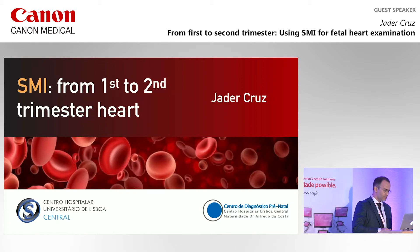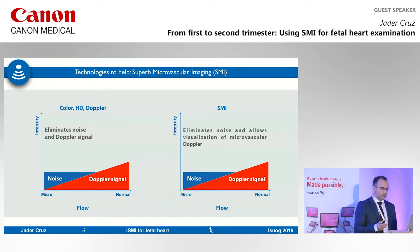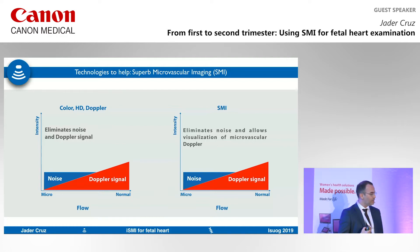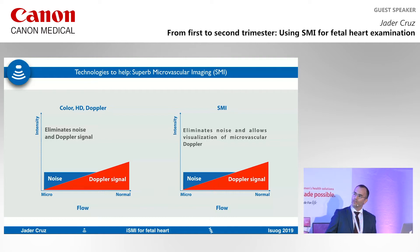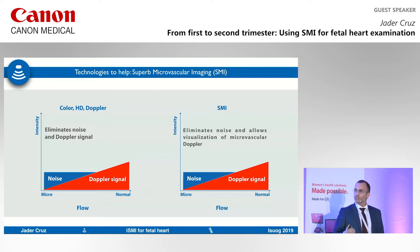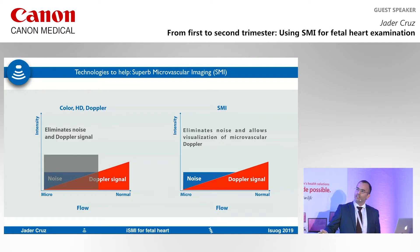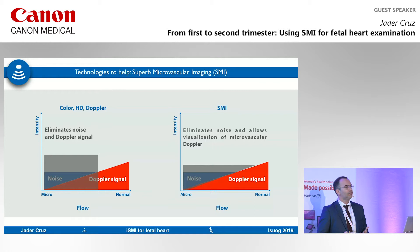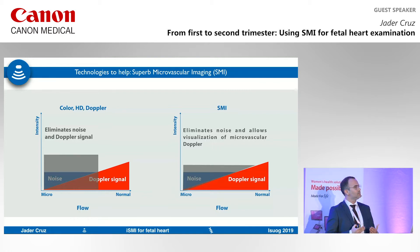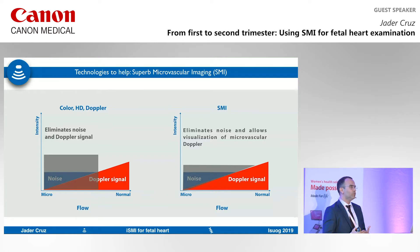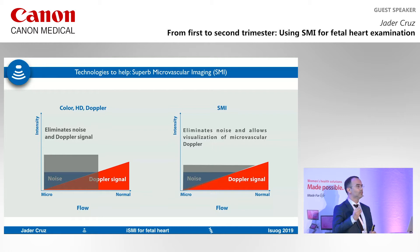So what is SMI? It looks very technical but it's actually quite simple. When you have a Doppler signal, you always have a little bit of noise. The machine cuts the noise, but you lose a little bit of the Doppler signal as well. SMI is similar to any other high-definition Doppler, but it eliminates the noise better, leaving you with pure Doppler so you can see the slower flow, the low impedance flow.